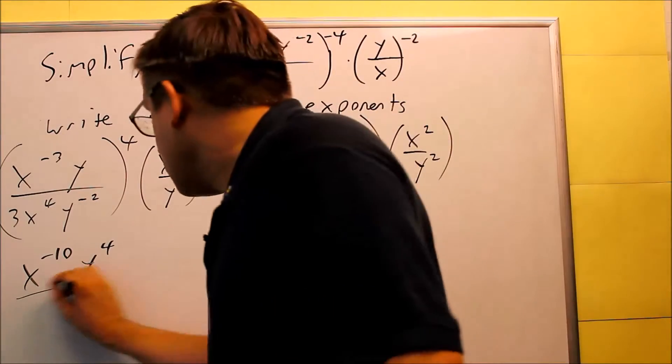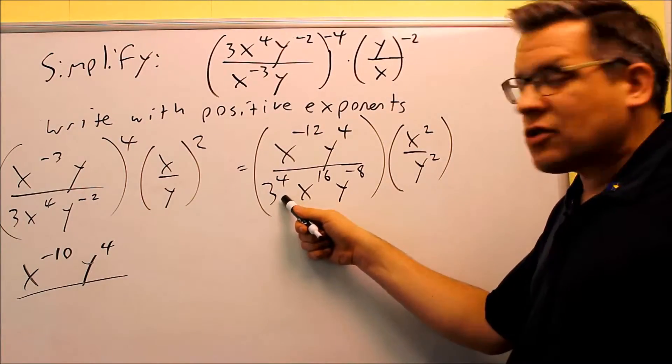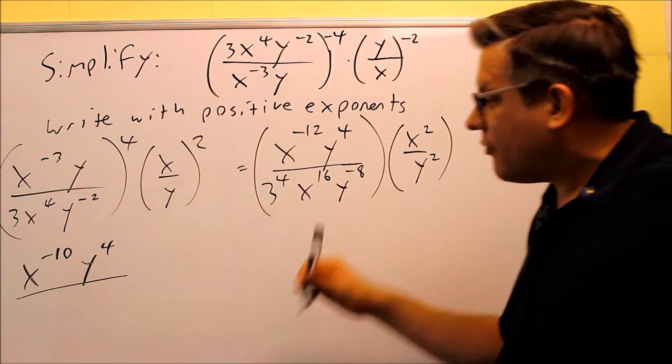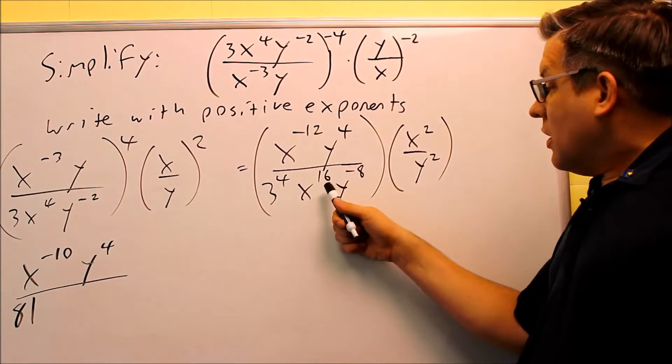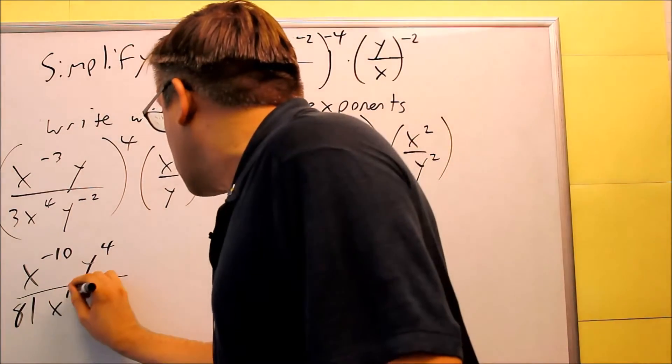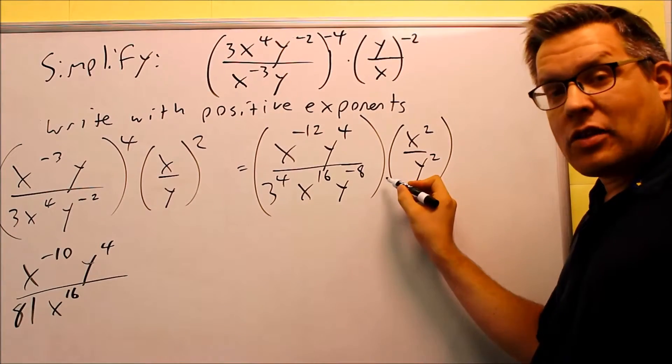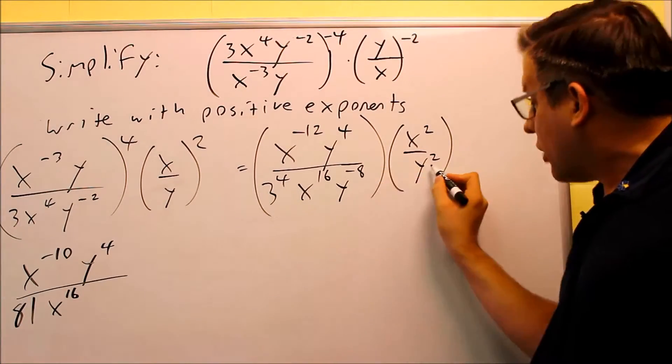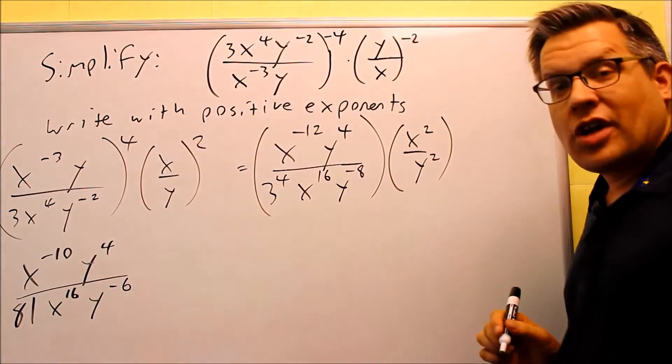On the bottom, don't forget about 3 to the fourth power. So 3, it's not 12, it's 3 multiplied 4 times. So 81 we have for that one. X to the sixteenth can't combine with anything, so I'll leave that as x to the sixteenth. And then for the y's, we're adding this also. So I have negative 8 plus the 2, I get y to the negative sixth.